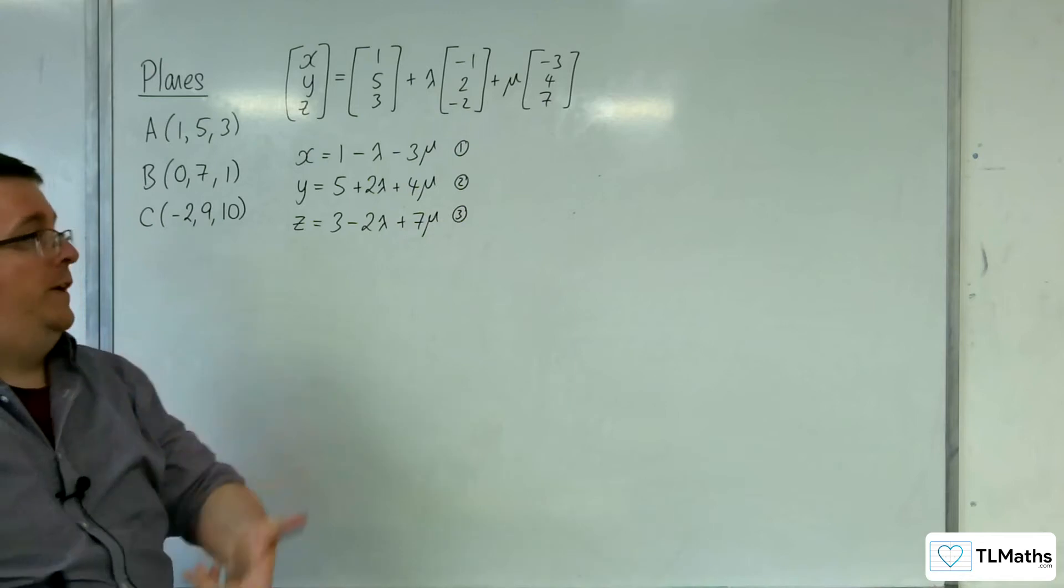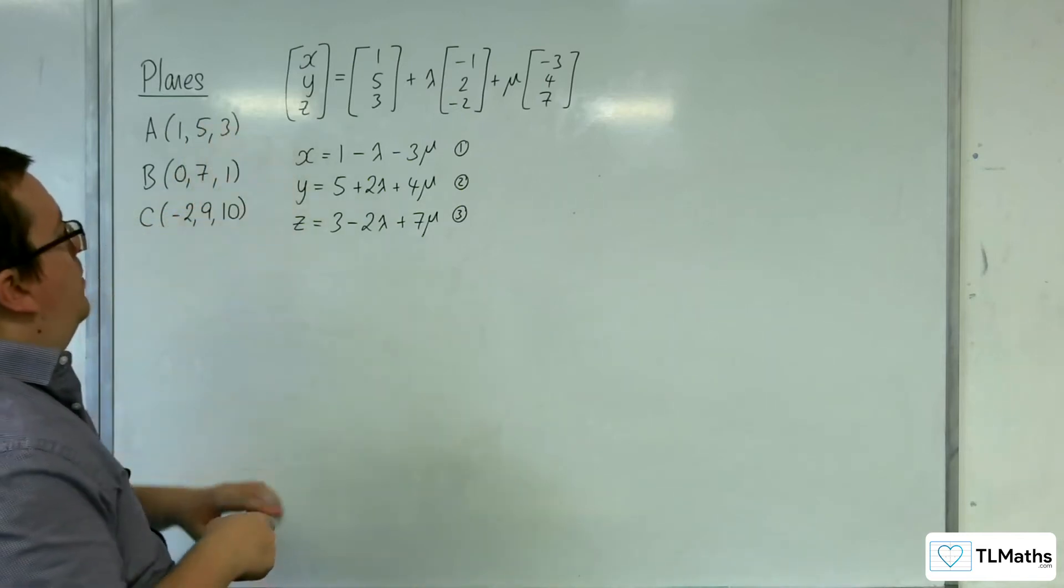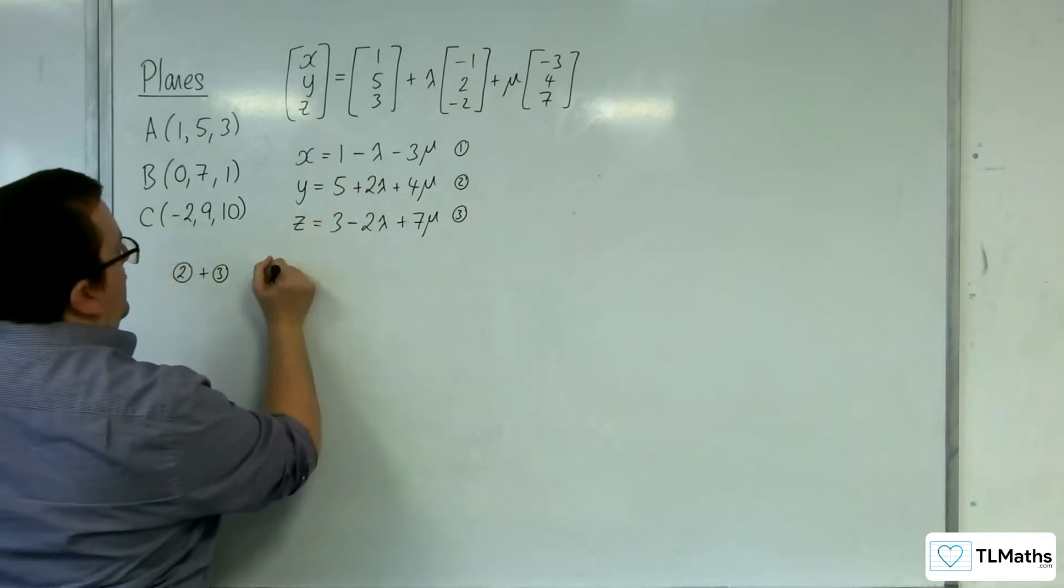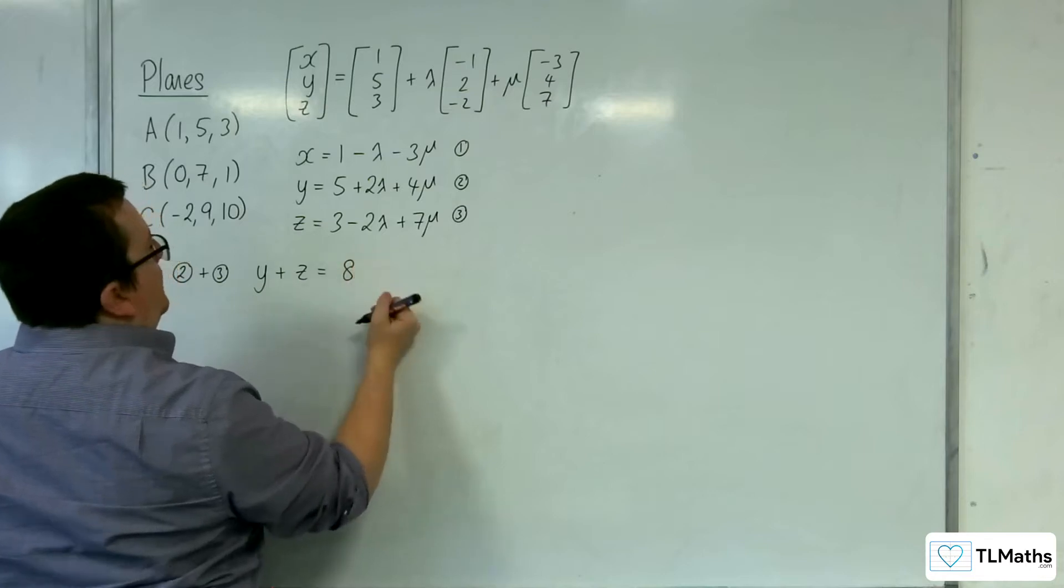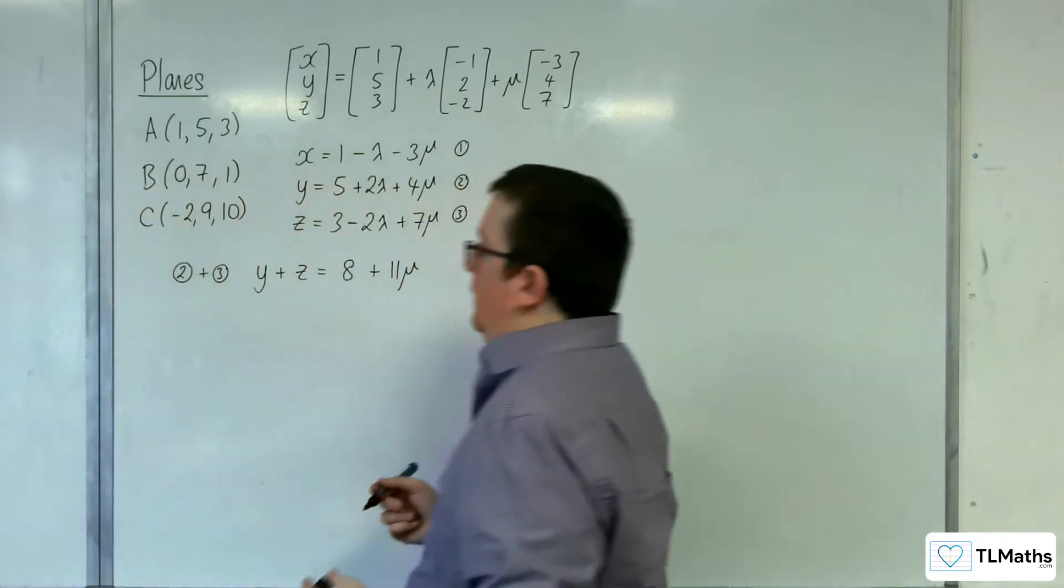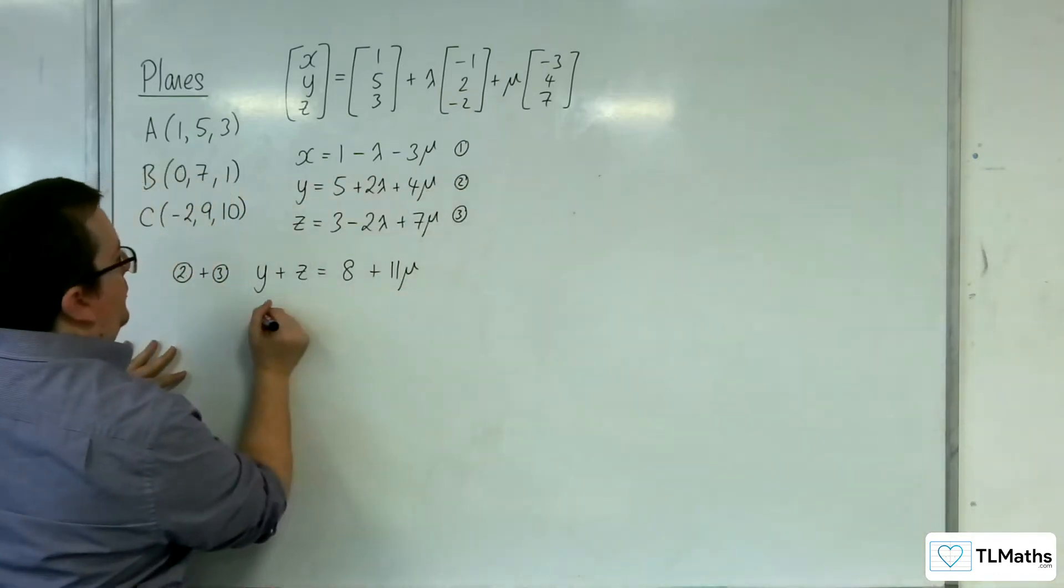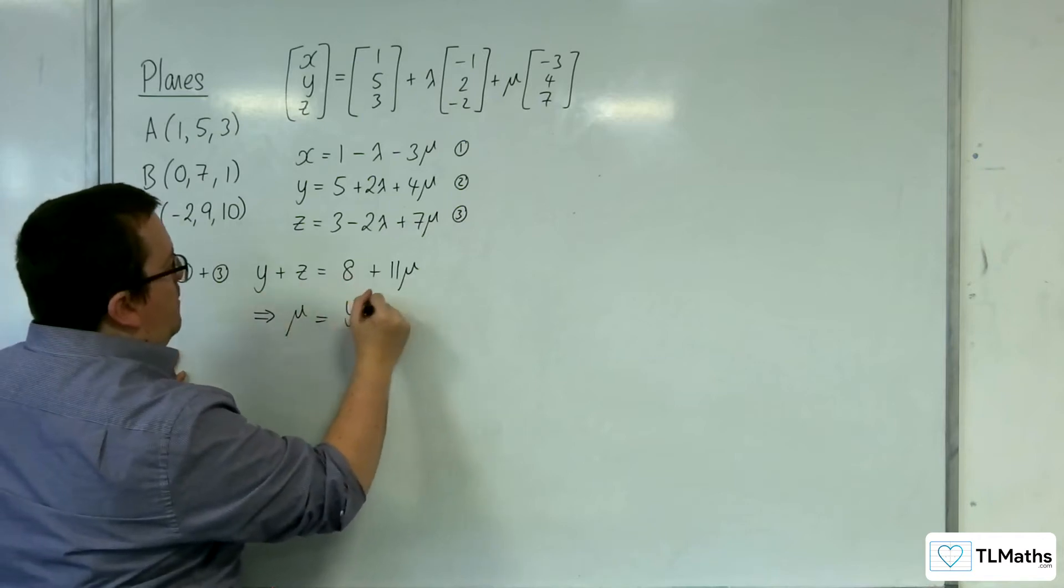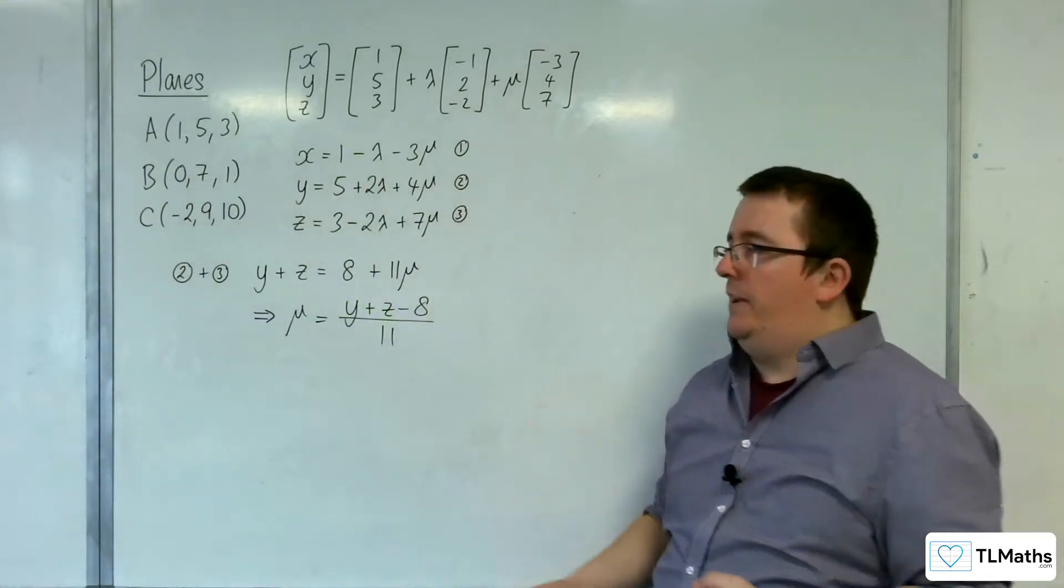So what we'll do is we will eliminate the lambdas first. We can see that we've got plus 2 lambda and a minus 2 lambda. So if I eliminate and add y plus z together, so if I do equation 2 plus equation 3, I'll get rid of the lambdas. That'll make it a little bit nicer. So y plus z will be equal to 5 plus 3, so 8. And then they're gone, and we've got 4 mu plus 7 mu, so 11 mu. Okay, so that's what we've got currently. And what that's going to enable us to do is get mu in terms of y and z. So I can rearrange this by subtracting 8 from both sides and dividing through by 11. So I now have mu in terms of y and z.